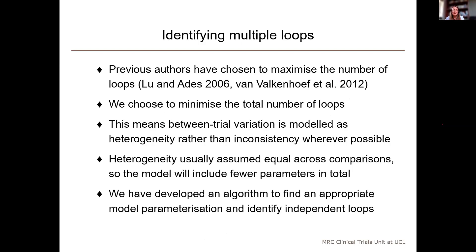So, yes, we've decided that we would prefer to model the variation as heterogeneity as far as possible. Because between-trial heterogeneity is usually assumed to be equal across all the different comparisons in the network. Minimizing the number of loops will produce a model that includes fewer parameters in total, and we think this could make interpretation easier. Identifying a model parameterization that minimizes the number of loops could be done by hand in very simple examples like the ones I just showed you, but it very quickly becomes complicated as the number of treatments increases. So, our algorithm, as well as identifying the loops, it also finds a suitable model that will minimize the number of loops in the model.